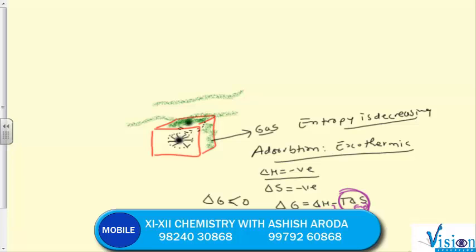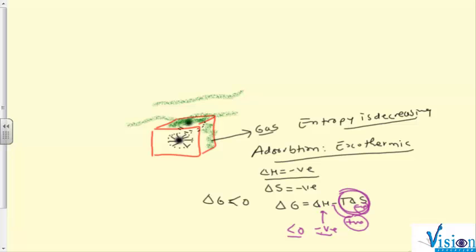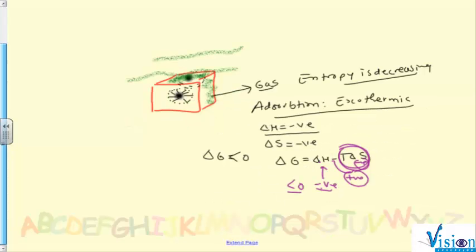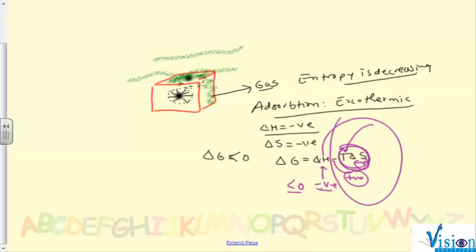In the case where delta G is not less than zero — in other words, if the value of delta H is not negative enough so that the whole expression is not less than zero — then adsorption will not occur. Also, as temperature increases, the term T delta S becomes more positive. So normally, adsorption does not take place at higher temperatures. It takes place at lower temperatures. If temperature becomes higher, adsorption decreases.